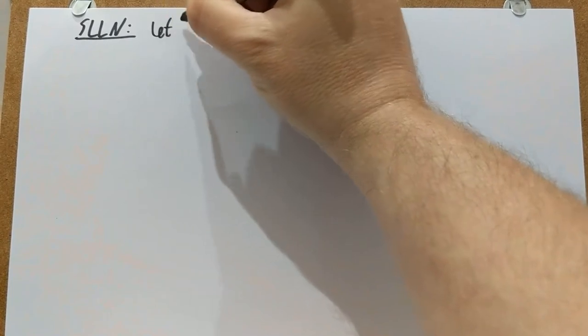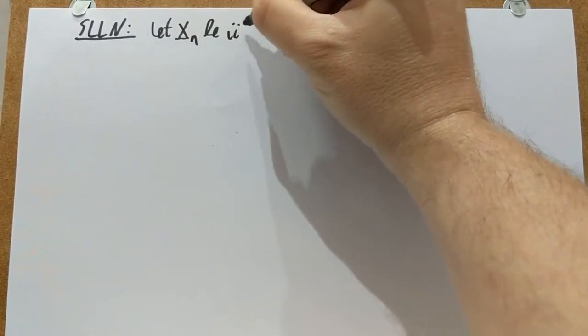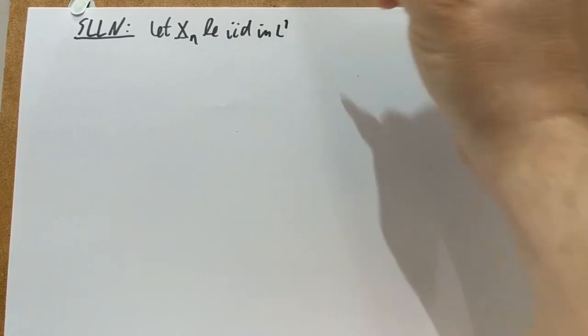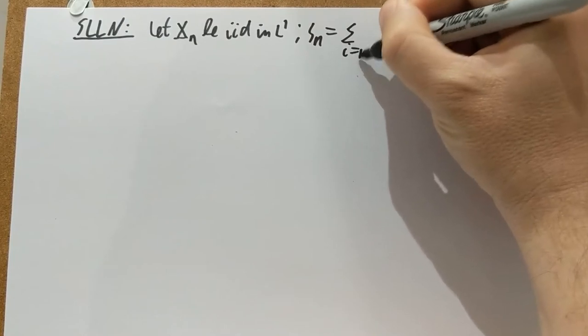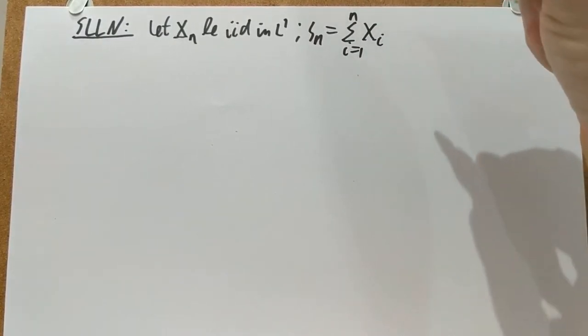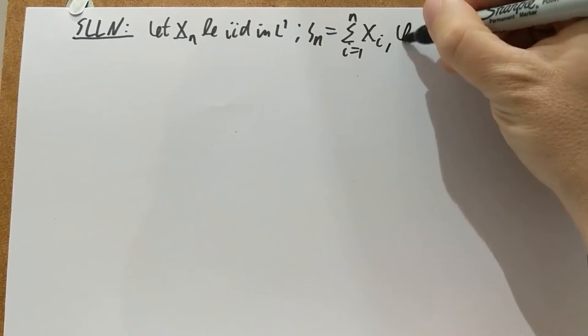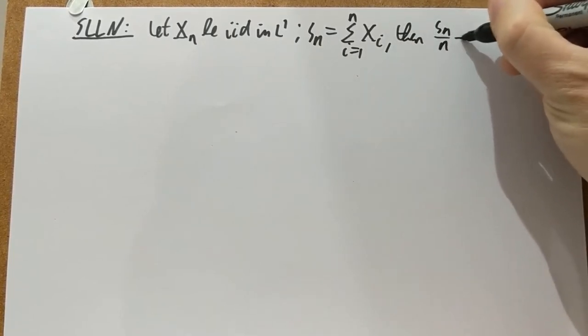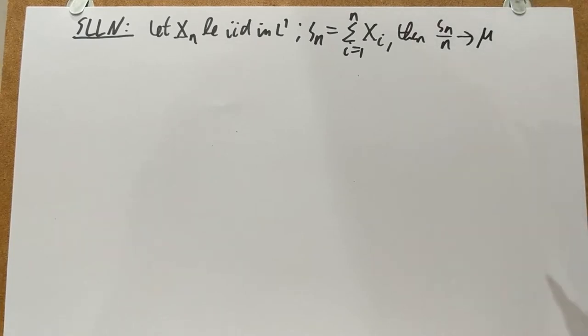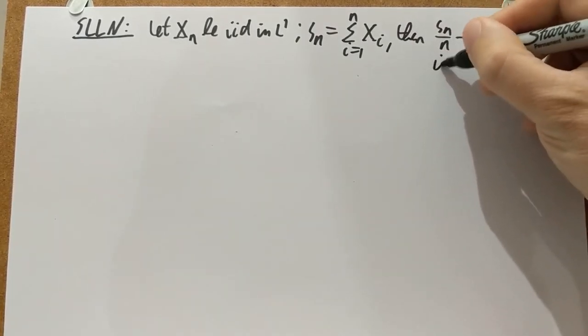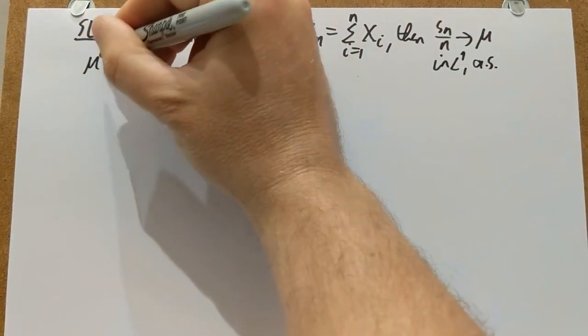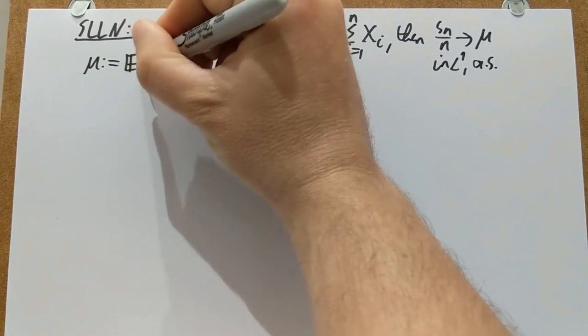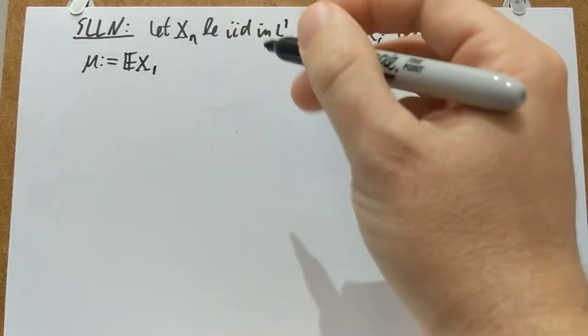So everybody knows what the strong law of large numbers is. Let X_N be IID in L1 on a probability space. Define S_N as the sum of the first N of them. Then S_N over N converges to the mean mu of the X_i's in L1 and also almost surely. Here mu is defined to be the expectation of the X_i's. It's all the same because they are IID.